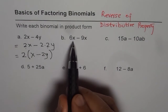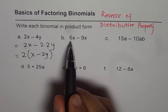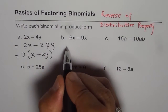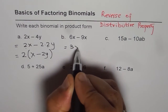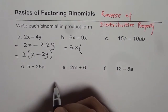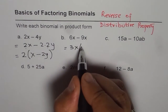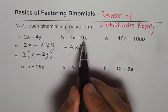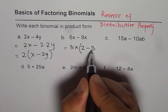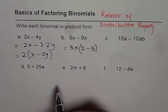Writing in product form, which is the reverse of distributive property, is factoring. Now for 6x minus 9y: x is a common factor, and in 6 and 9 we know 3 is a common factor. So we can write 3x as the common factor. What remains is 6x divided by 3x, which is 2, and 9y divided by 3x — we look at the coefficients — leaving us with the bracket contents.